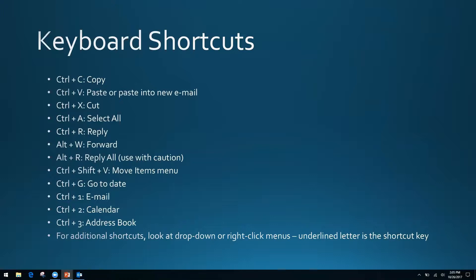A couple of shortcuts unique to Outlook: Ctrl+R to automatically reply to a selected email, Alt+W to forward an email, and Alt+R to reply all — use that one with caution. A lot of people do not need to reply all all the time, and you can get yourself into a little trouble if you're replying all to things you shouldn't be passing along to everybody. Ctrl+R for reply is probably the better choice unless you know for sure that everybody needs the information you're sharing.